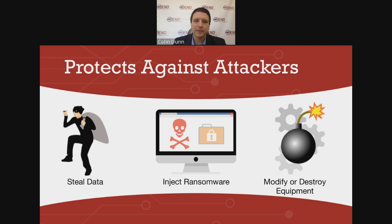You can get that data without somebody using that connectivity to steal information. There are folks that might be penetrating a network to steal sensitive information — they might make it onto the OT network from the IT network, or they might be looking to steal trade secrets or information about how a factory is operating. You also have to worry about attackers injecting ransomware not just on IT networks but OT networks. A lot of these controllers are running some version of Windows, and they could be held for ransom themselves. You might not have a backup copy of that chiller plant or that substation — and with supply chain shortages, you might be waiting years to get a replacement part.